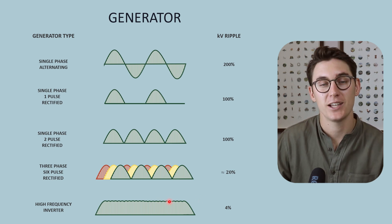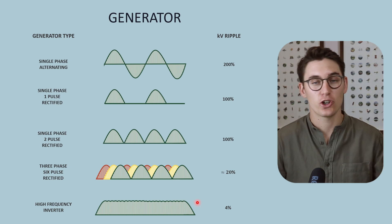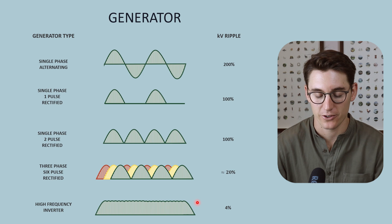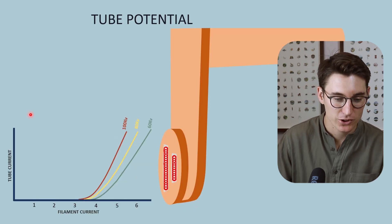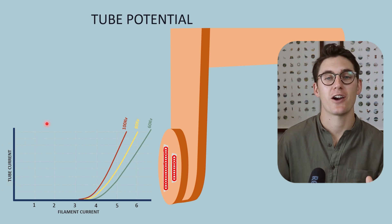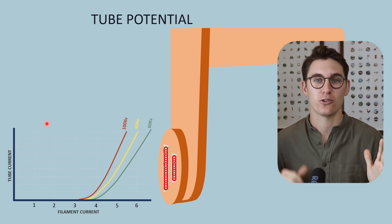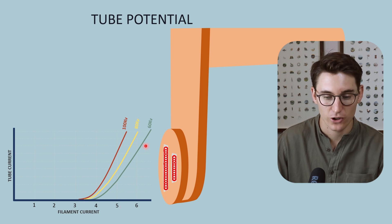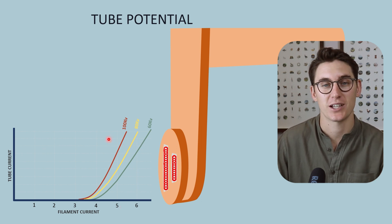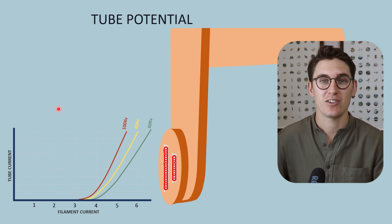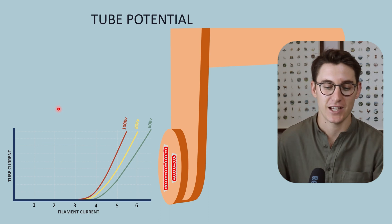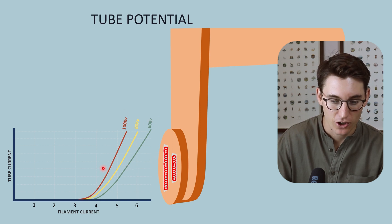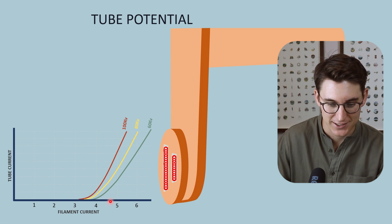Our kVp — our kilovoltage peak — determines the energy of the electrons going from cathode to anode, and also has an effect on the number of electrons flowing between them. Looking at a graph of tube current — the number of electrons flowing from the cathode to the anode over time — we can change two things to manipulate tube current. The first is increasing kVp by selecting a higher kVp in our primary circuit and stepping it up through the transformer. As we increase kVp, say from 60 to 80 to 100 kV, we get a shift of the graph to the left.